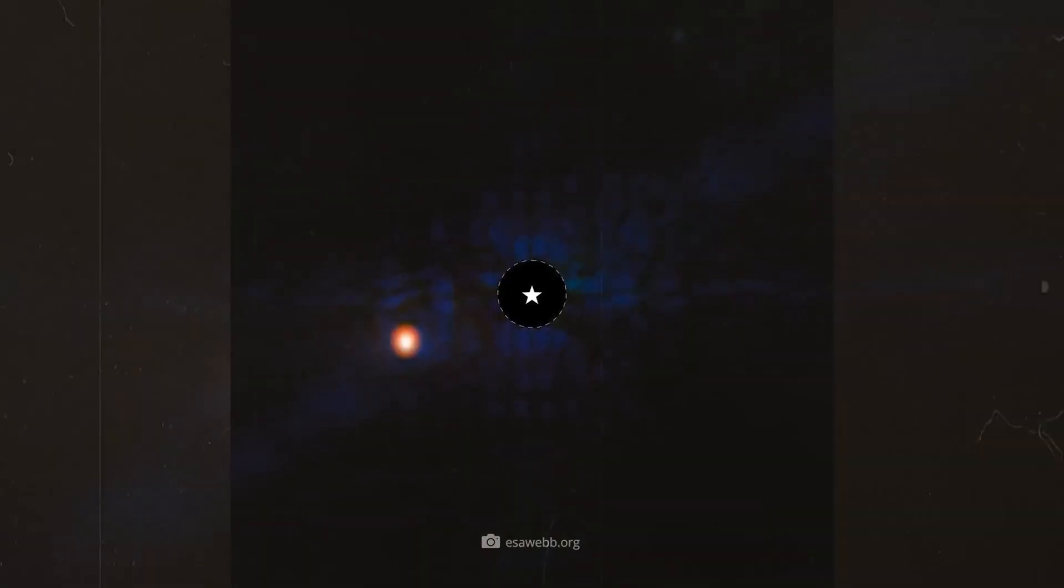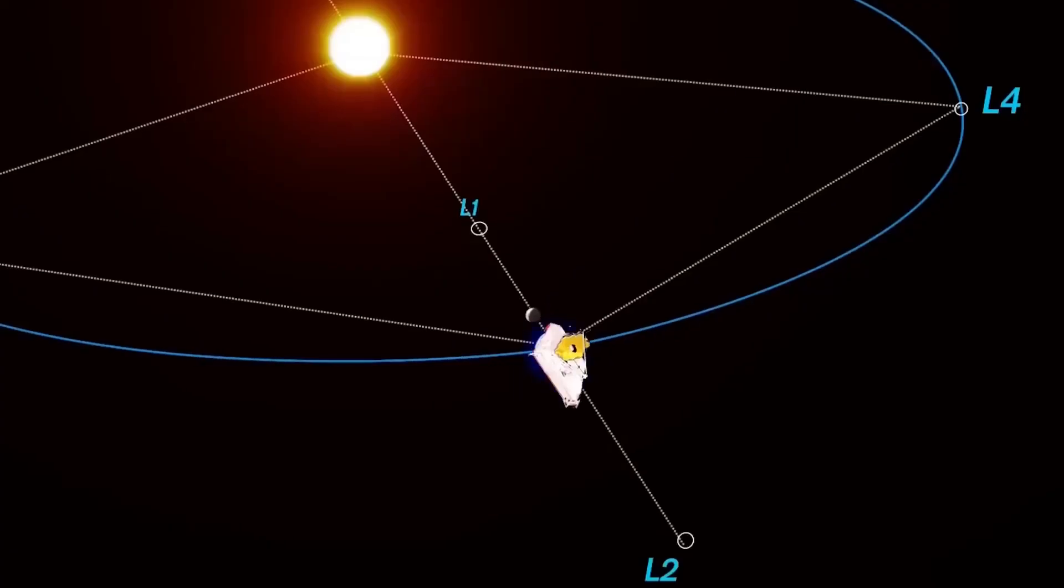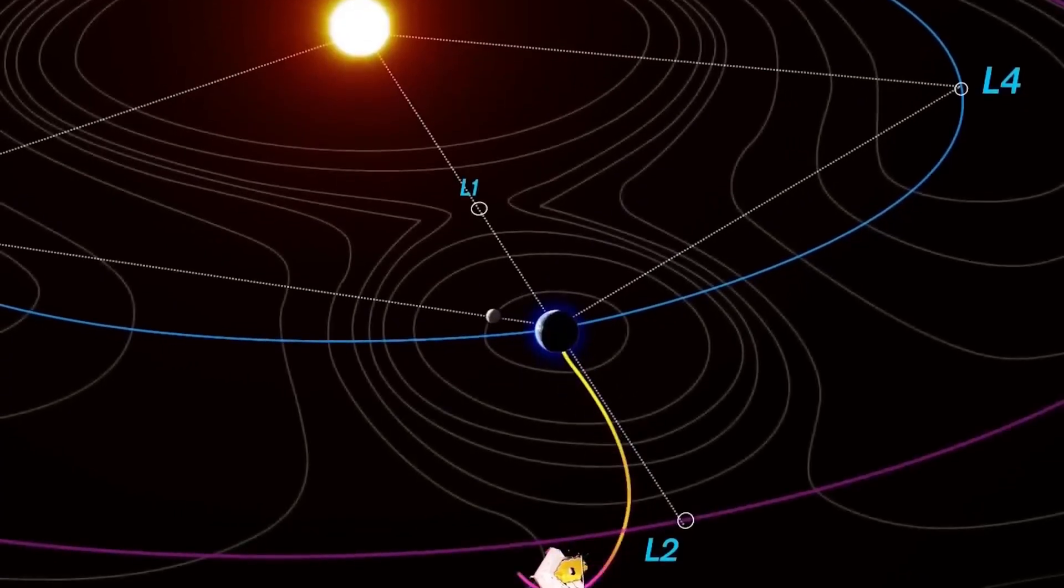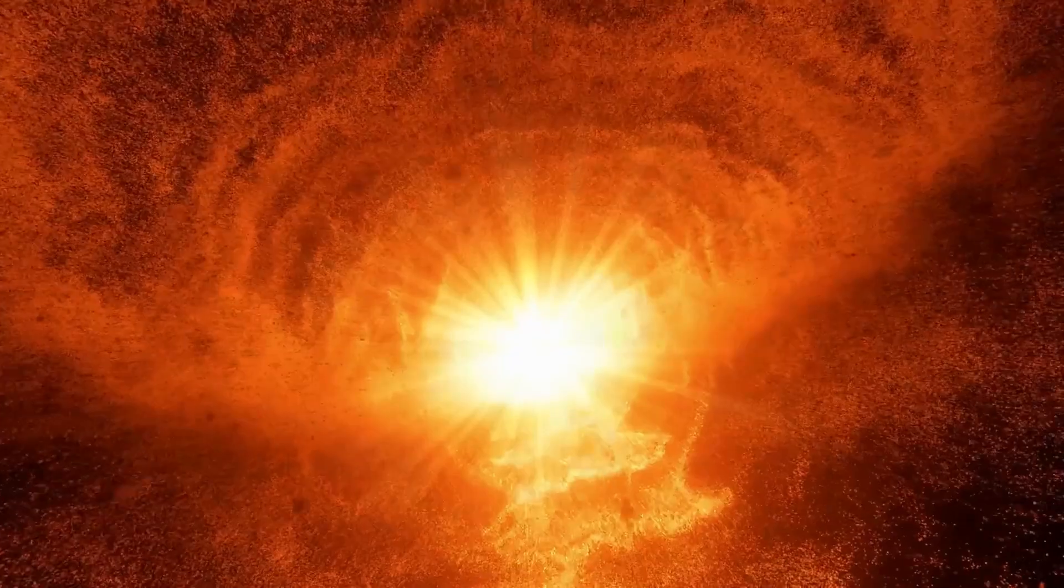The situation is quite different in the case of the cold super Jupiter. Epsilon Indy AB has actually existed for about 3.5 billion years.